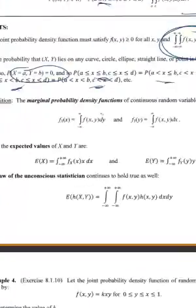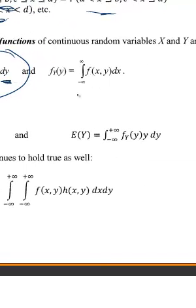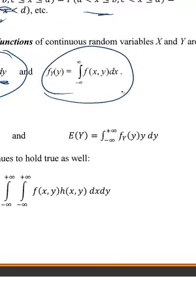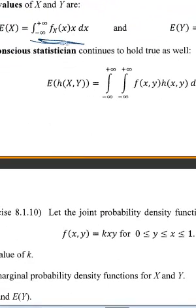To find the marginal of x, you integrate over y's. To find the marginal for y, you integrate over your x's. For expected value, once you find your marginal, it's just f(x) times x or f(y) times y. You can also find the expected value of any function of x and y using the Law of the Unconscious Statistician.